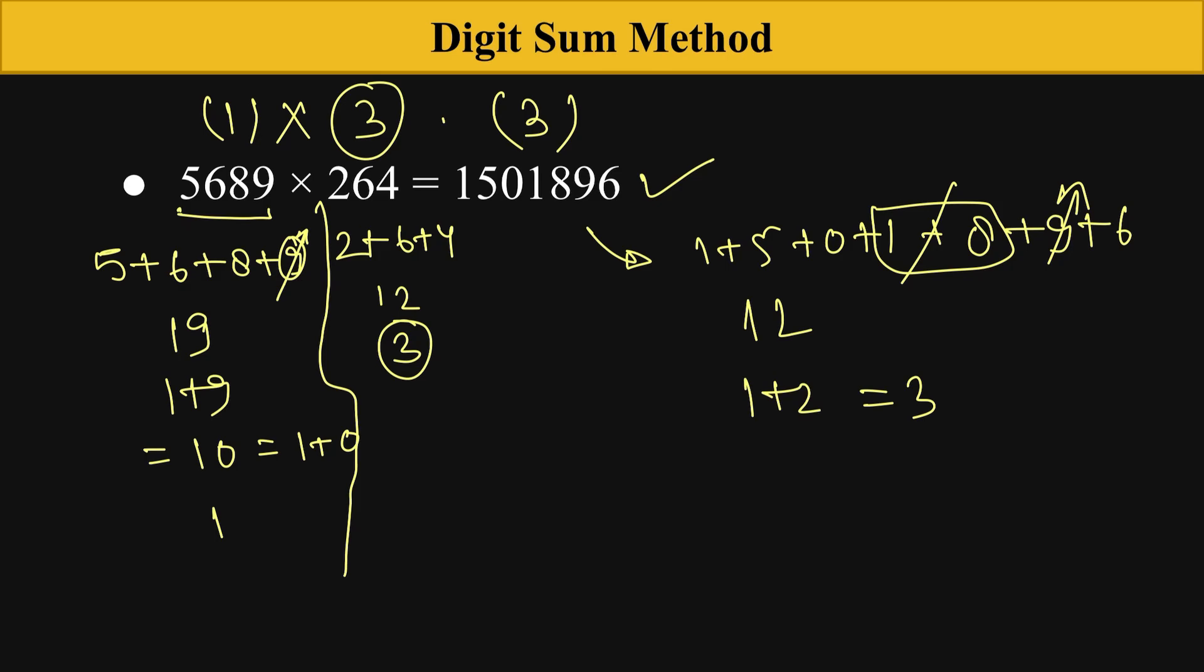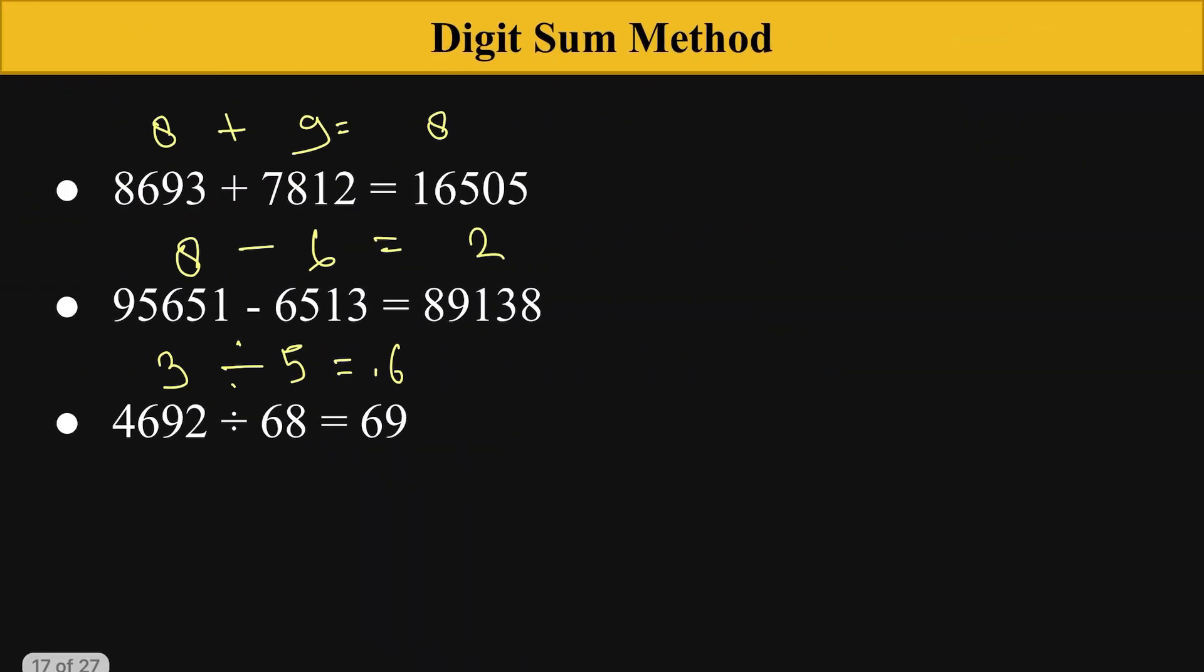Now 1 times 3 equals 3. You can find the relation - the digit sum also follows the calculation. Just like that, you can apply this on every calculation.